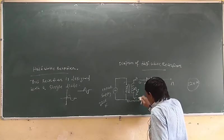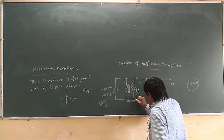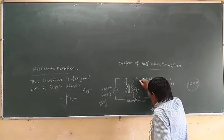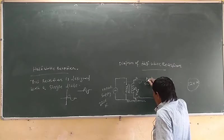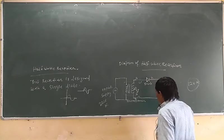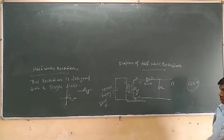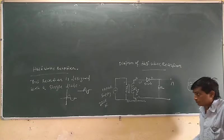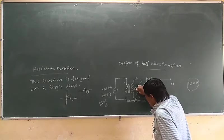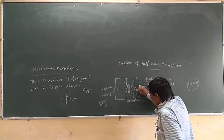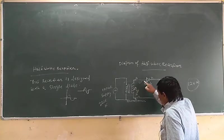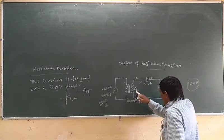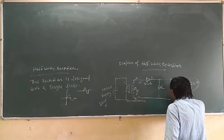After the cycle changes, point A becomes negative and point B becomes positive. This positive is connected to the cathode point and the negative is connected to the anode point. So the diode is in a reverse biased condition. In reverse biased condition, the current cannot flow through the diode, so there is no output during this half cycle.